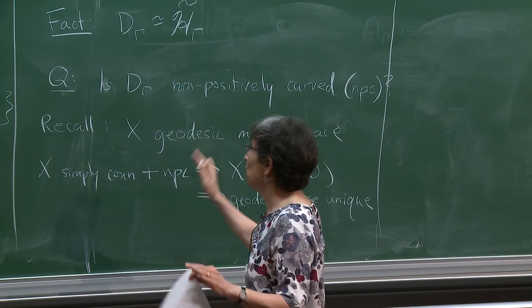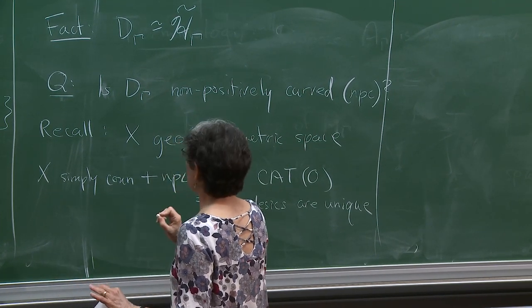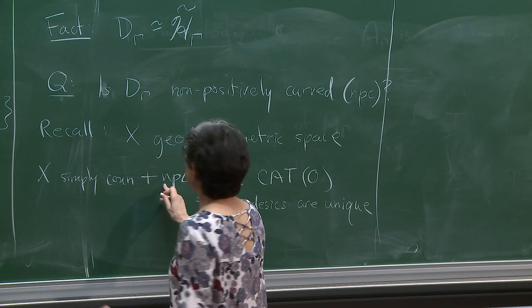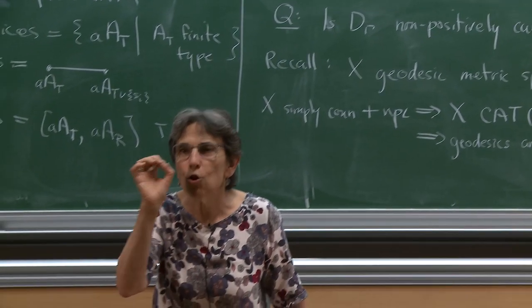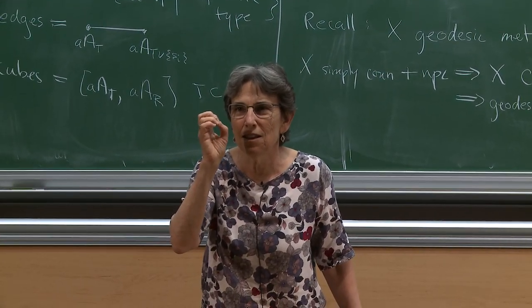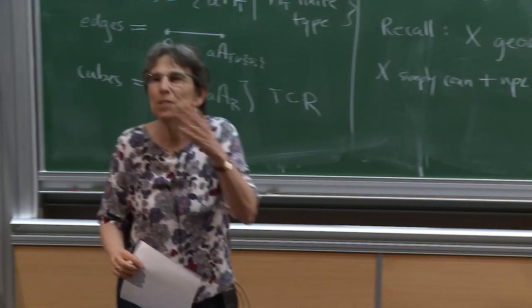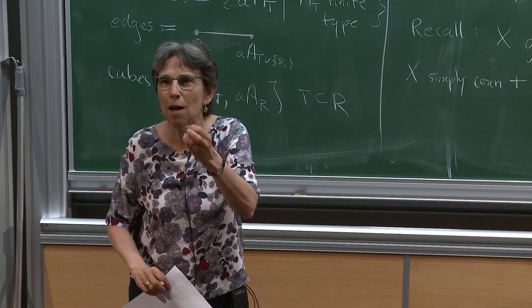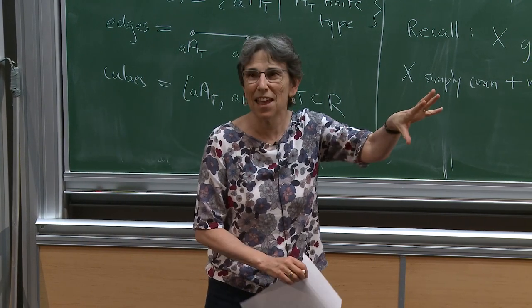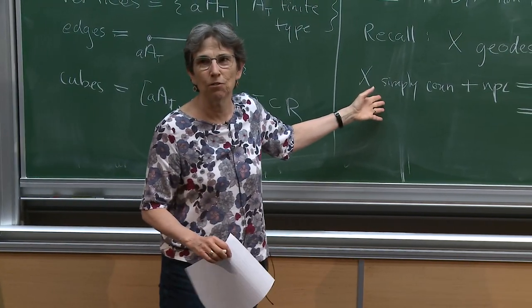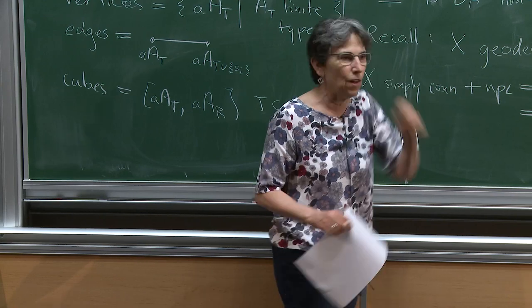There is a notion of non-positively curved for general geodesic metric spaces — it just means locally CAT(0), a local version of CAT(0). In my particular case it's going to be a cube complex, so non-positively curved will be proved using the flag condition. This is actually true more generally if you define it to mean locally satisfying the CAT(0) condition.